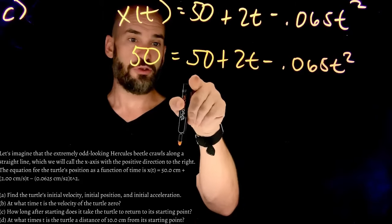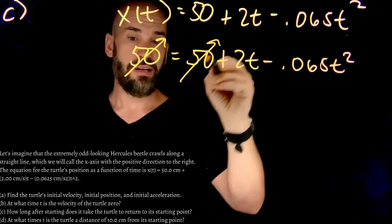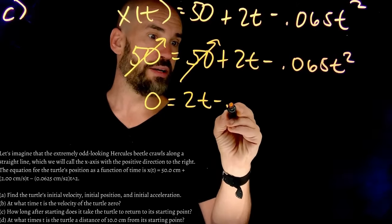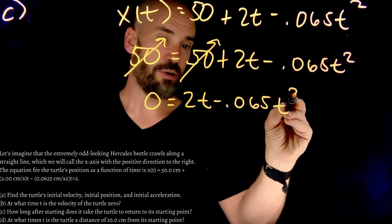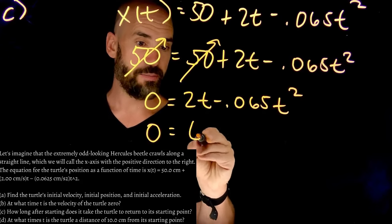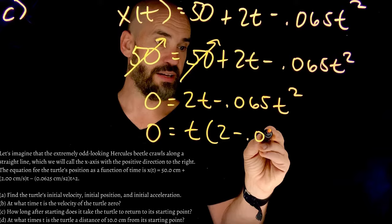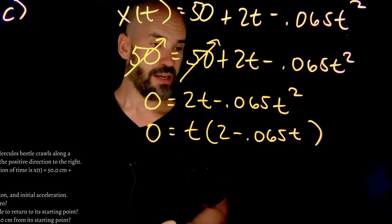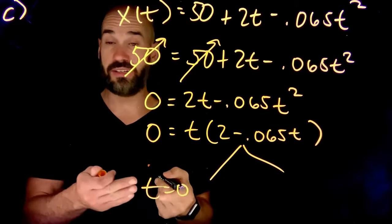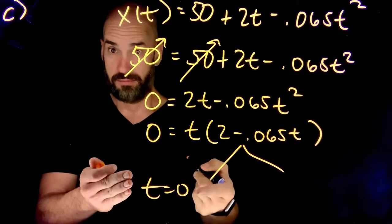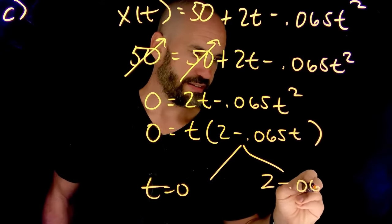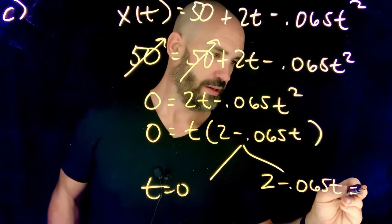So we just simply take 50 equals 50 plus 2t minus 0.065 t squared. Obviously, if you subtract 50 from both sides, these guys cancel out. So really, this is a problem of 0 equals 2t minus 0.065 t squared. So this is pretty simple. We can just factor this 0 equals, we'll pull a t out, and we'll get t times 2 minus 0.065 t. And so what that means is that this is either t equals 0, which is obvious. Obviously, it's going to be in its initial position at its initial position at its initial time. But this is a little bit more interesting, 2 minus 0.065 t equals 0.